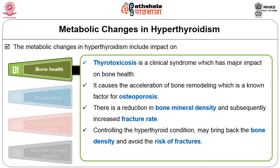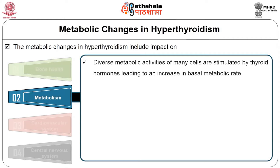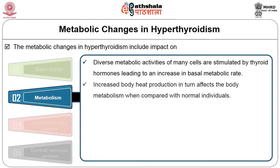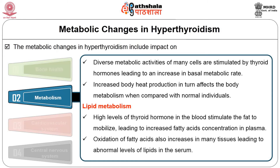Controlling the hyperthyroid condition may bring back bone density and avoid the risk of fractures. Diverse metabolic activities of many cells are stimulated by thyroid hormones, leading to an increase in basal metabolic rate and increased body heat production. Regarding lipid metabolism, high levels of thyroid hormone stimulate fat mobilization, leading to increased fatty acid concentration in the plasma. Oxidation of fatty acids also increases in many tissues, leading to abnormal lipid levels in the bloodstream.